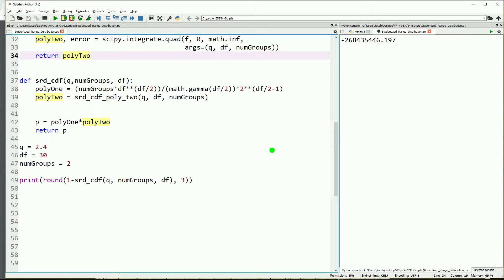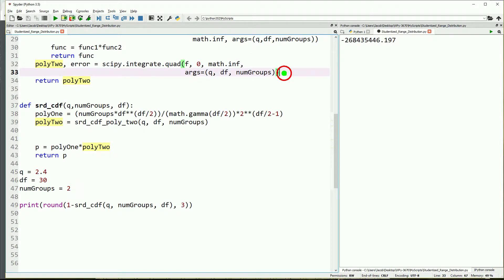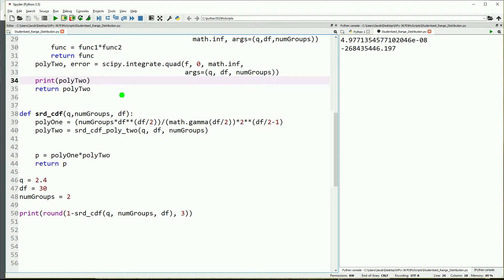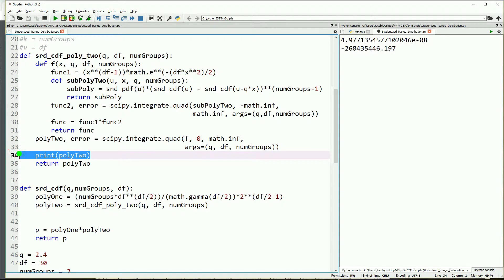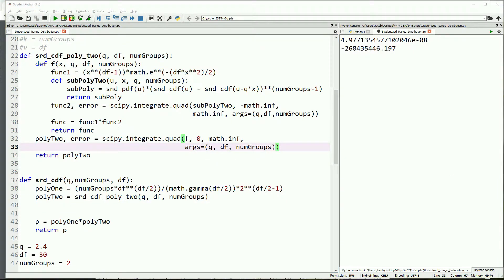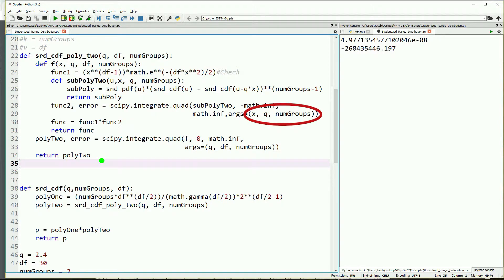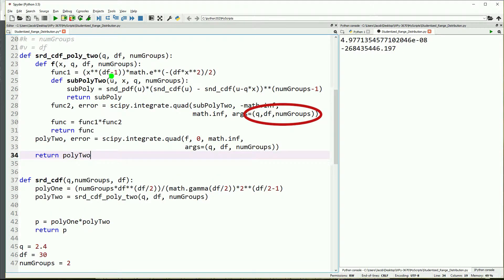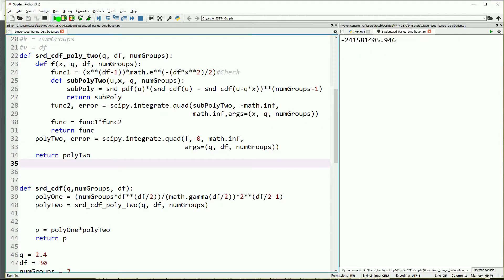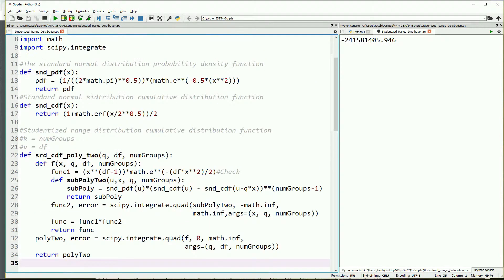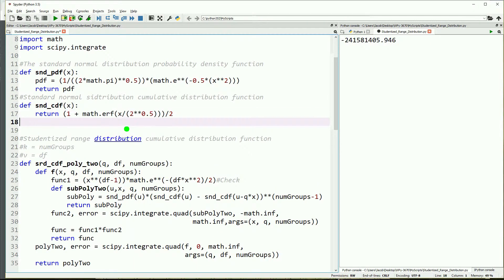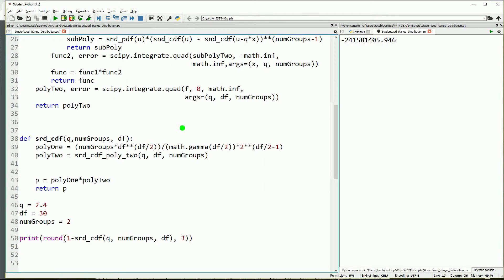We start by adding in print statements again and see if the numbers we're getting are in the right ballpark. So I'm seeing one error - I put the wrong arguments in. I should have put in x, q, num groups, not q, df, num groups. Next, I go back up and take a look at the pdf and cdf for the standard normal distribution as we are still not getting the value that we should be getting. I'll try running the code again with the code from my notes. Nothing's different there. Nothing's wrong with those. That just leaves one spot left and that's going to be poly 1.